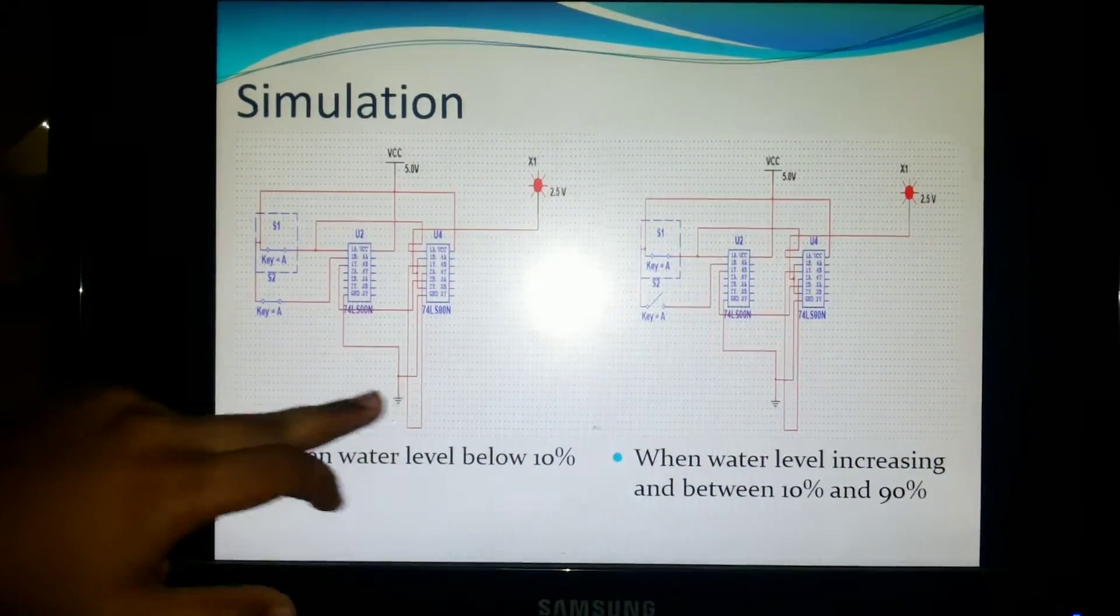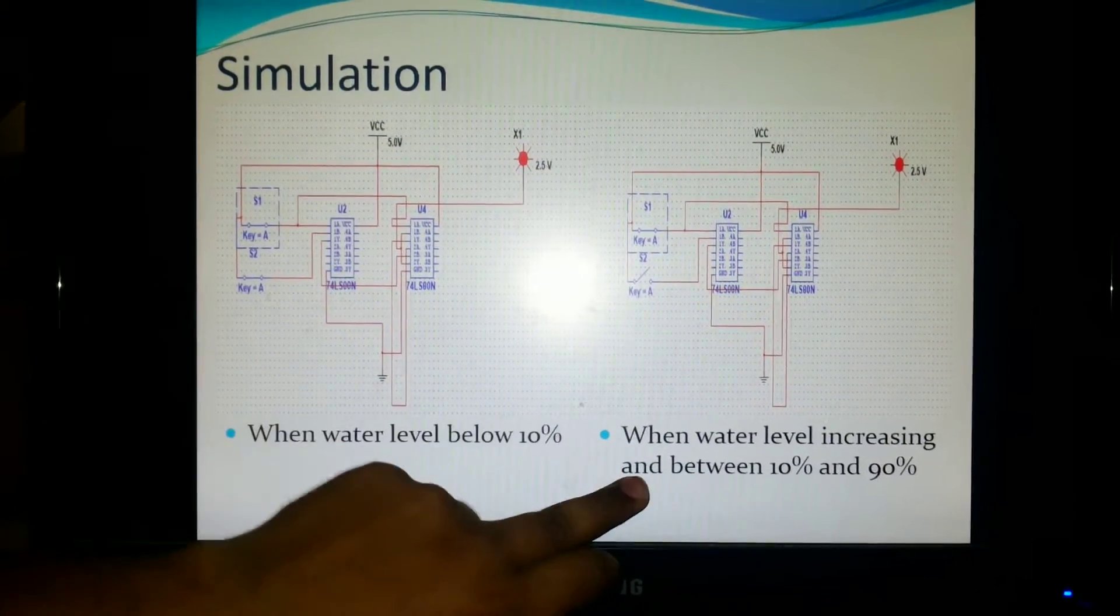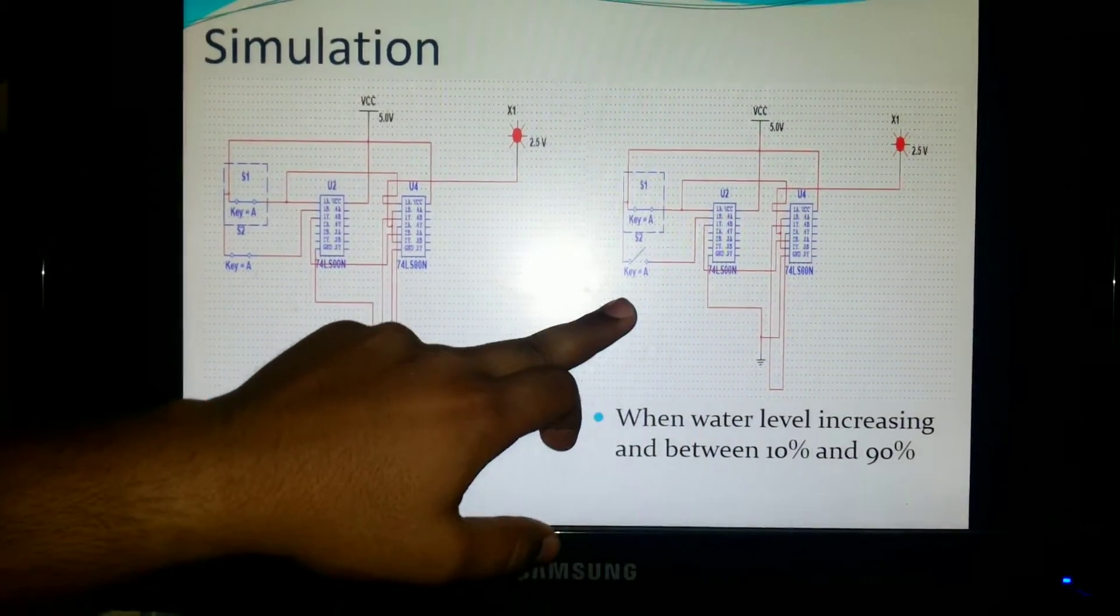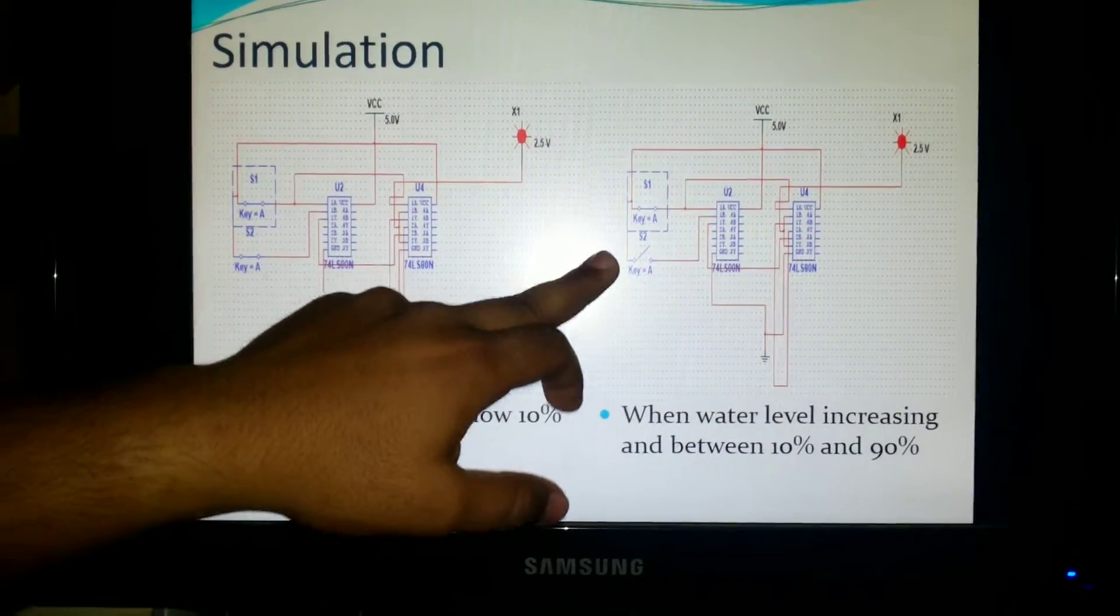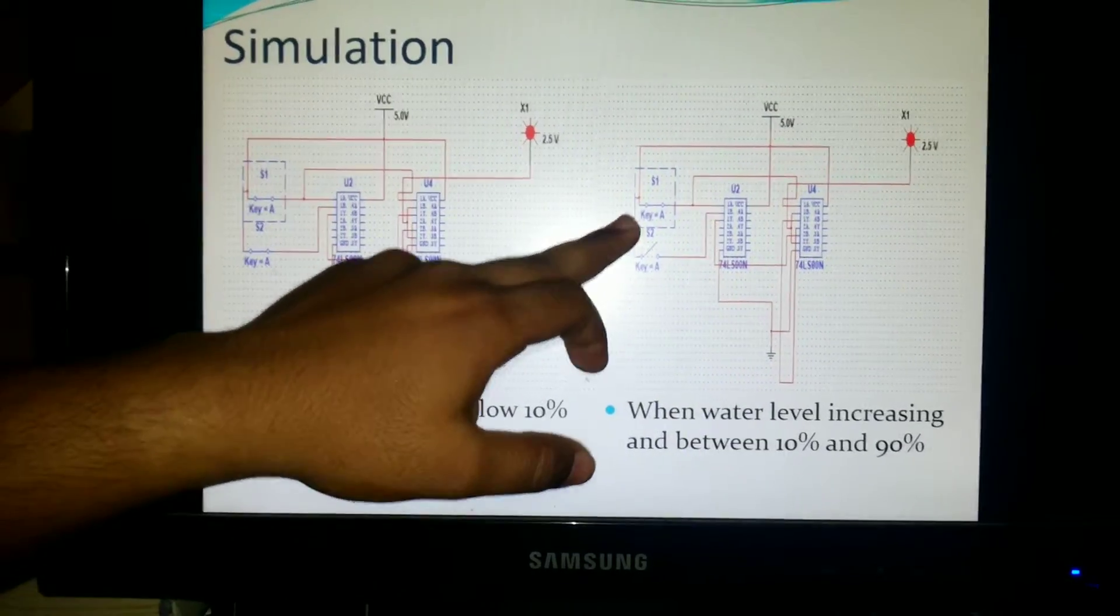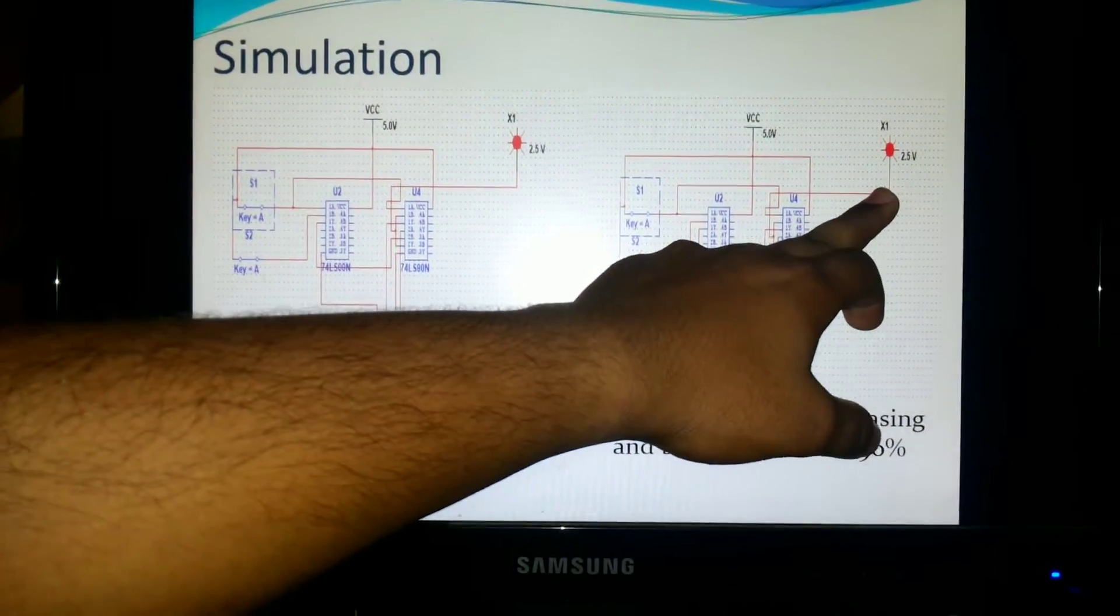That means the sensor is on. And when water level is increasing and it is above 10 percent and below 90 percent, the switch is still on, the sensor is still on and the bulb is lighting, still on.